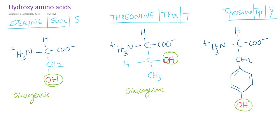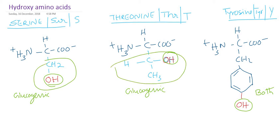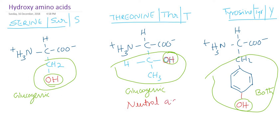Threonine is also glucogenic, but it is both glucogenic and ketogenic. All three amino acids are neutral amino acids — there is no charge in the side chain of any of them. They are uncharged, so all three are neutral amino acids.